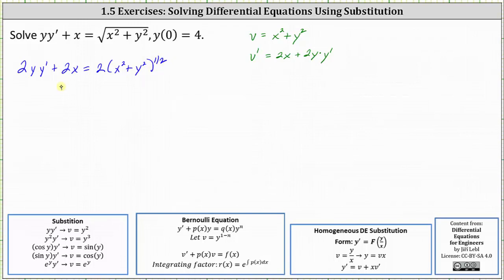The left side is now v prime. The right side is 2v to the one-half. And now we have a separable differential equation.